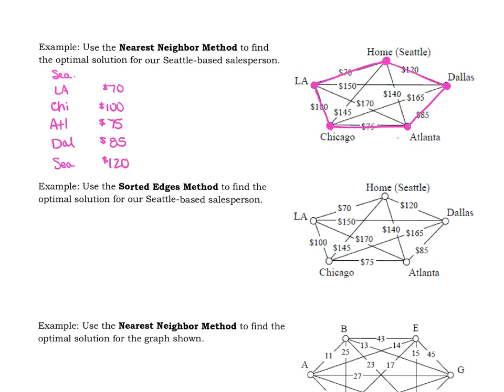And then now we're in Dallas, and so it's time to go back home to Seattle at a cost of $120. So notice we have made a circuit. We started in Seattle. We went to every city on our list. And then the last thing in the nearest neighbor method says the sum of the weights is an approximation of the optimal solution. So if we add all of those values or the costs together, we will find that it will cost about $450.